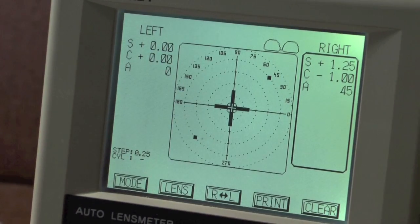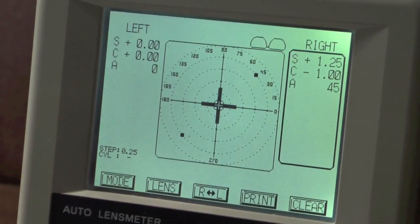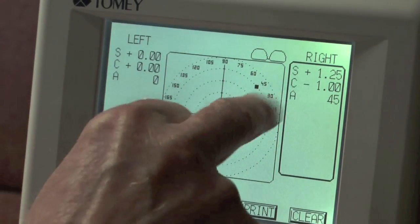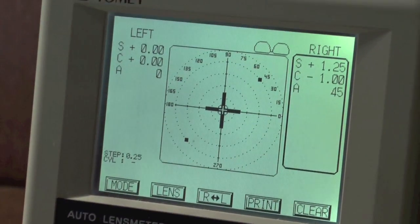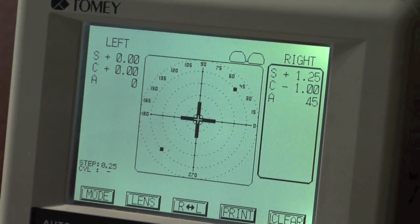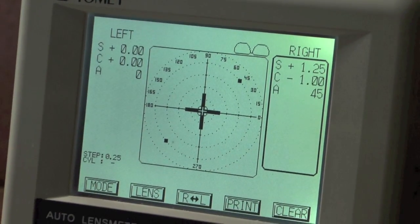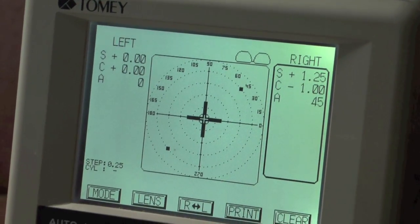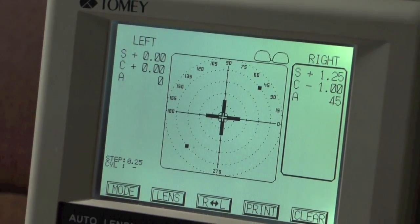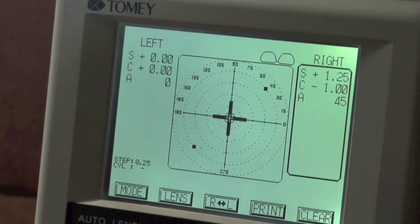And so when you get that nice sharp, you know it's in the right place. And let's look at the prescription there. Plus 1.25, minus 1, axis 45. Absolutely spot on. That's exactly what we wanted according to the prescription that we started with. So the right lens we know is absolutely correct.